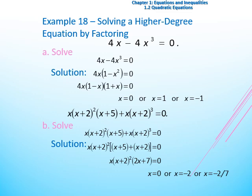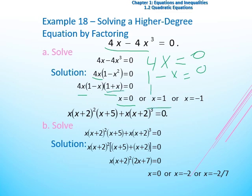Let's take a higher-degree equation by factoring: 4x minus 4x cubed equal to 0. We take 4x as a common factor to get 4x times (1 minus x squared) equal to 0. Then factoring further: 4x times (1 minus x) times (1 plus x) equal to 0. We have three products equal to zero: if 4x equals 0 then x equals 0; if 1 minus x equals 0 then x equals 1; if 1 plus x equals 0 then x equals negative 1. So we have three solutions for x.